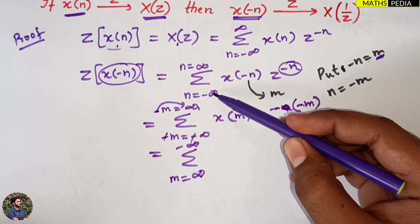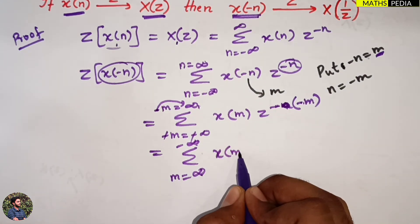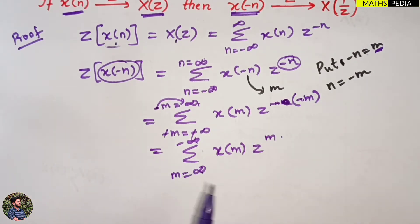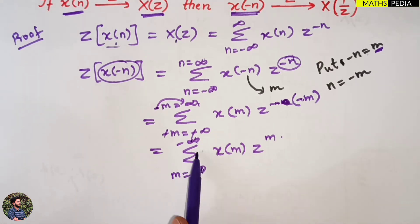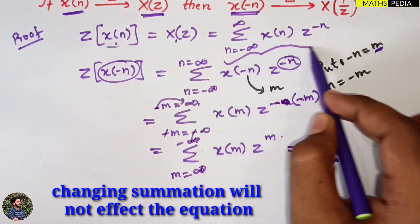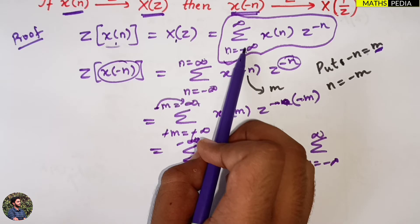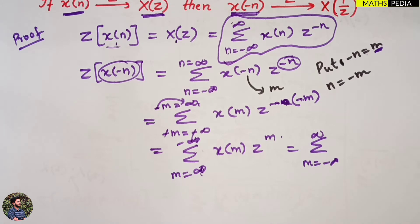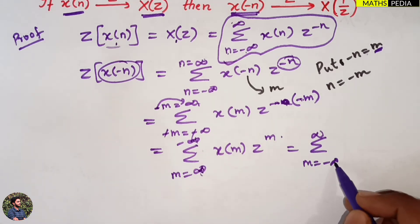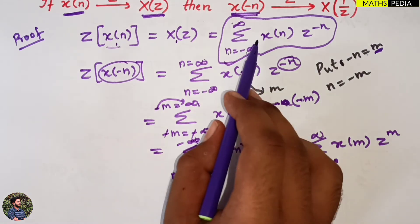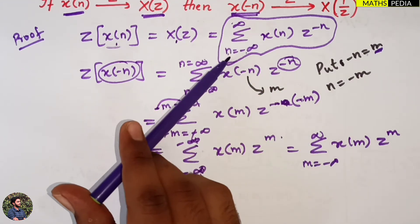Now the expression becomes: summation from ∞ to -∞ of x(m) · z^m. We can directly change the summation direction to run from -∞ to ∞, since n is just a dummy variable. So it becomes: summation from m = -∞ to ∞ of x(m) · z^m, and changing the summation direction does not change anything else.